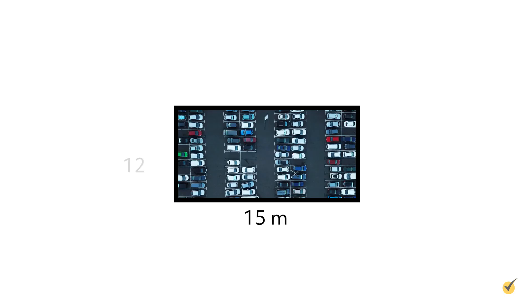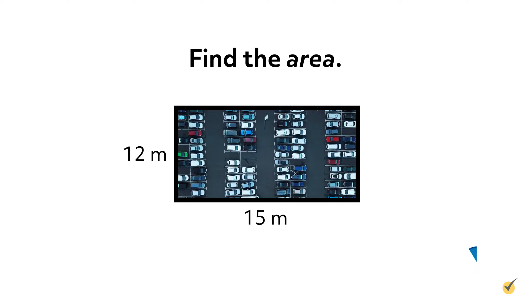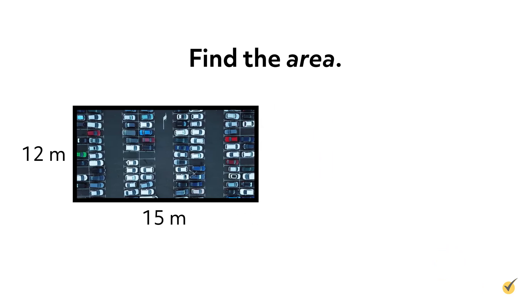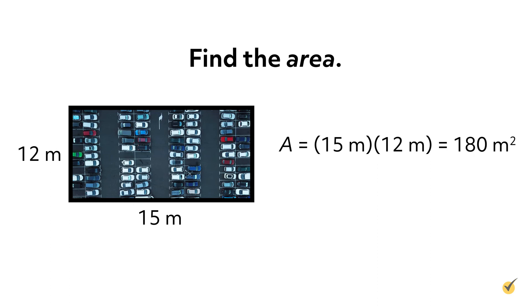Here's another example for you to try on your own. Suppose a rectangular parking lot is 15 meters long and 12 meters wide. What is the area of the parking lot? Be careful to state the units of your answer. Pause the video until you calculate your solution, then press play and compare your answer to mine. Since the length is 15 meters and the width is 12 meters, the area is A equals length times width, which equals 15 meters times 12 meters, which equals 180 square meters.